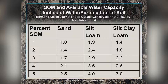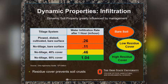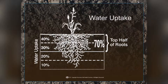Dynamic properties of infiltration are highly related to how much residue we have on the soil surface. Research from Ohio State University shows that plowed soil gets about 0.26 inches of water infiltration per hour. No-till kept bare drops to 0.11 inch per hour because rain seals the pores. Adding 40% residue cover on no-till increases infiltration to 0.46 inch per hour, and at 80% cover it goes up to 1.04 inches per hour. It's really important to have not only the residue on the surface, but also those roots to create the pores in the first place.